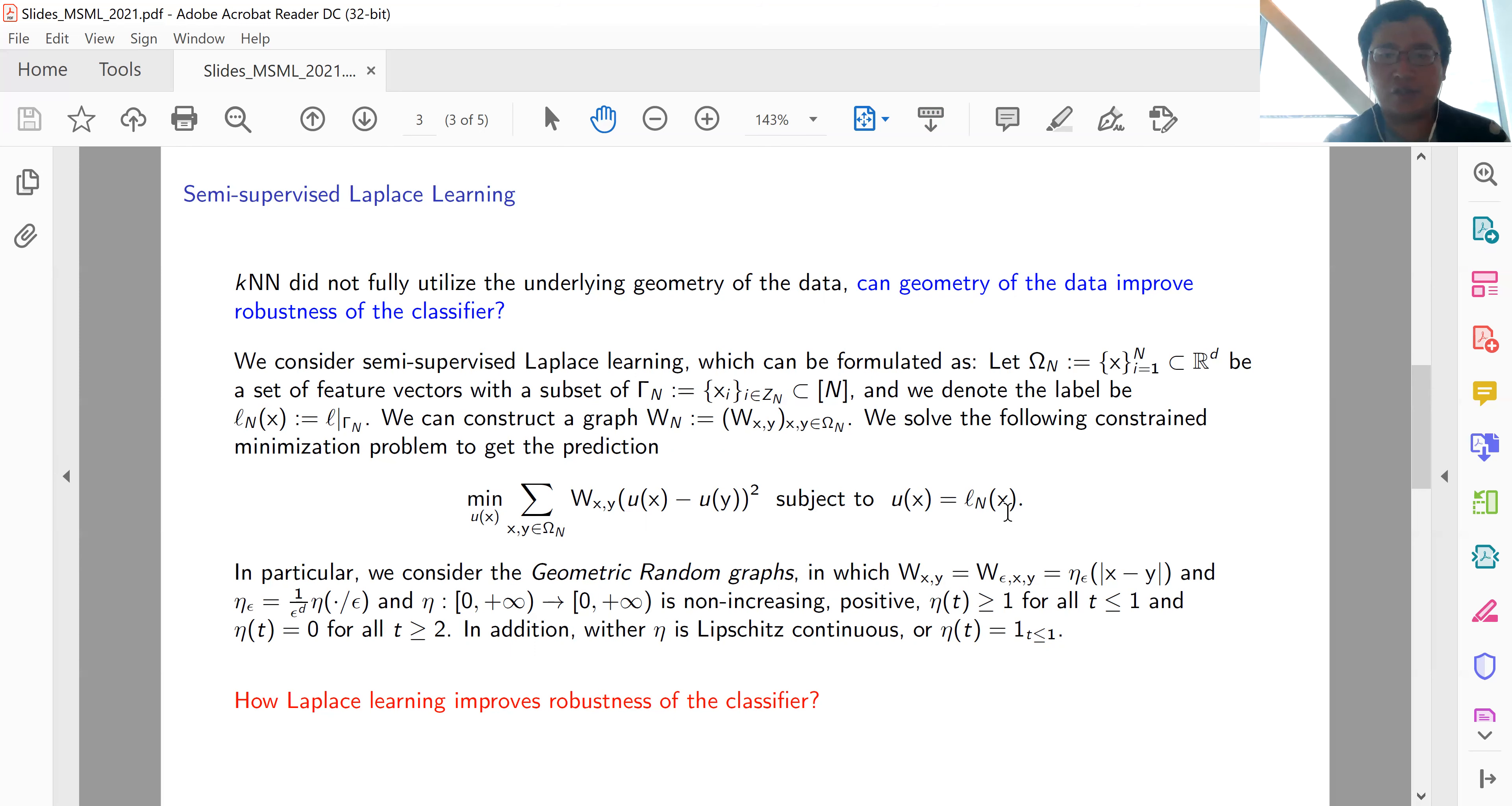In particular, we consider geometric random graphs in which the graph width W_ε is parameterized by a function η_ε of scale ε. This η is a non-increasing positive function with η(t) ≥ 1 for t ≤ 1 and η(t) = 0 for t ≥ 2. In addition, either η is Lipschitz continuous, or χ(t) ∈ [0, 1]. So theoretically, we want to ask: how does Laplace learning improve robustness of the classifier?